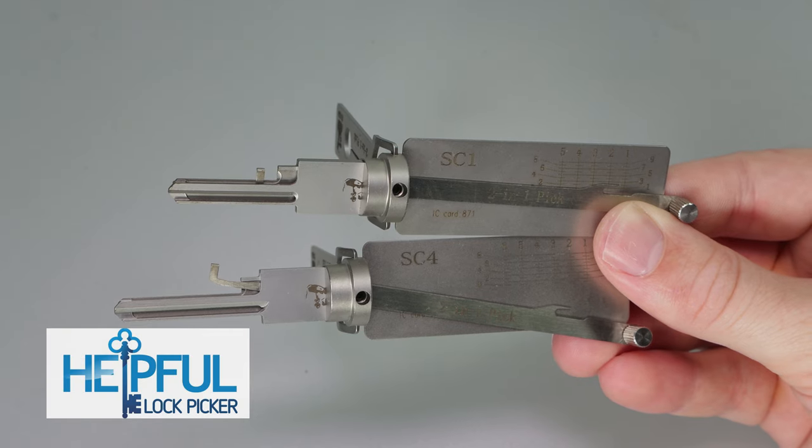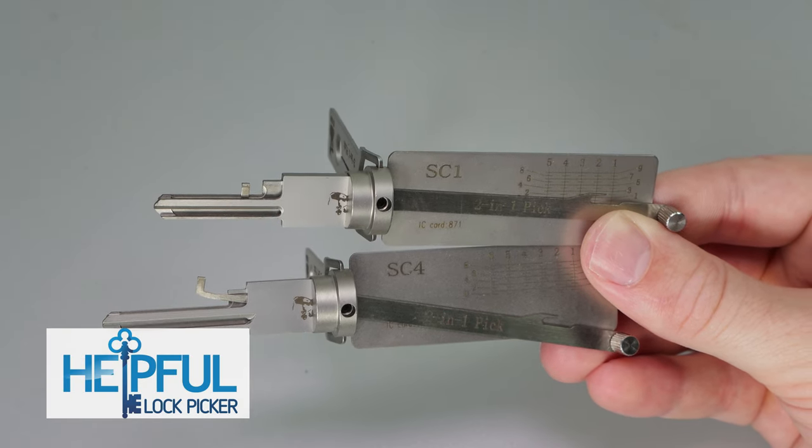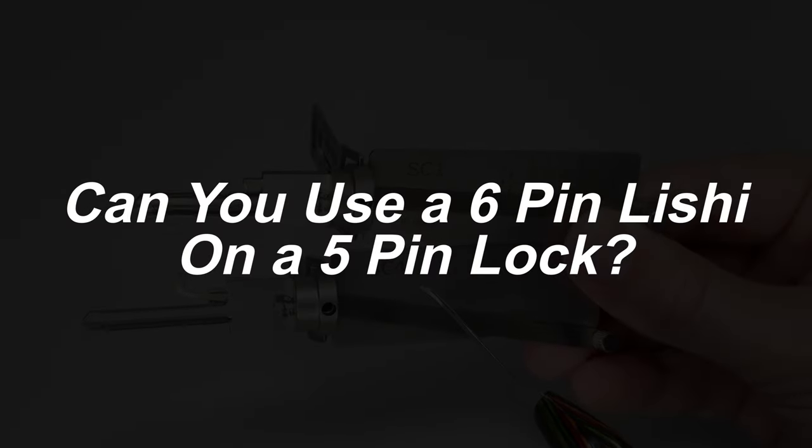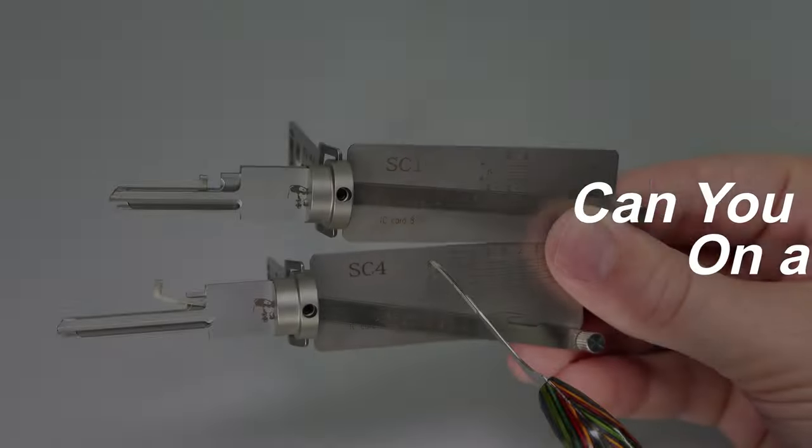Hey guys, how's it going? This is Hopeful Lockpicker here, and in today's video, I'm going to try to answer a question that I get asked quite often. Can you get away with just buying a 6-pin version of the Lishi tool, or do you need to buy both the 5 and the 6-pin?